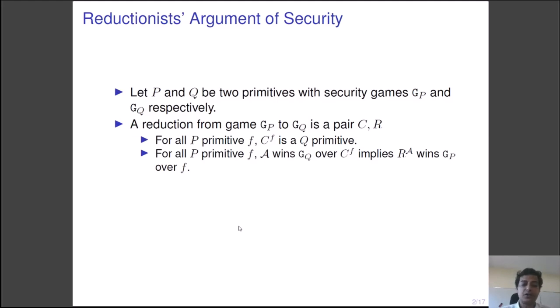The reduction R ensures that if there exists any attacker A winning against CF in GQ, then the reduction with the help of the algorithm A can beat the function F in the game GP. As the algorithms are probabilistic, we measure the efficiency of a reduction in terms of success probability. We say a reduction is tight if for the same success probability as A, the reduction needs to spend approximately the same time.